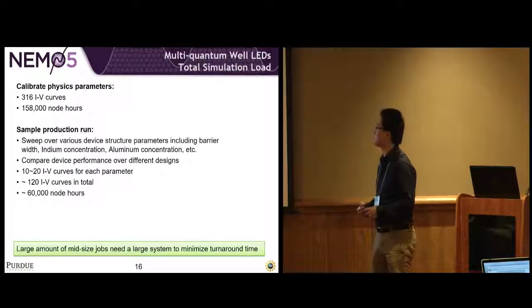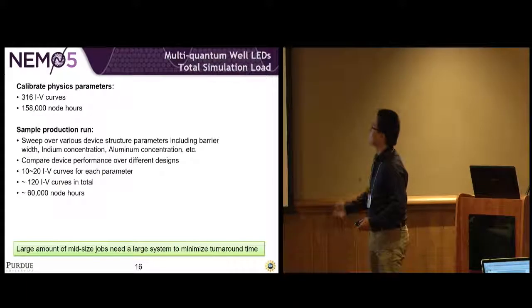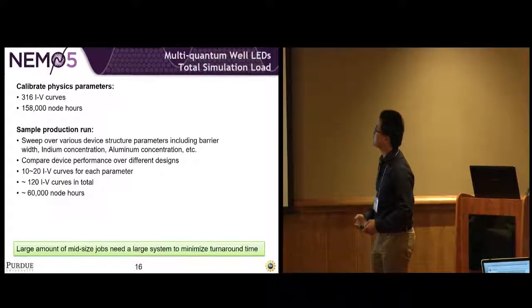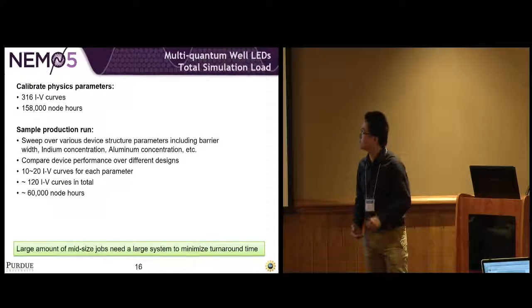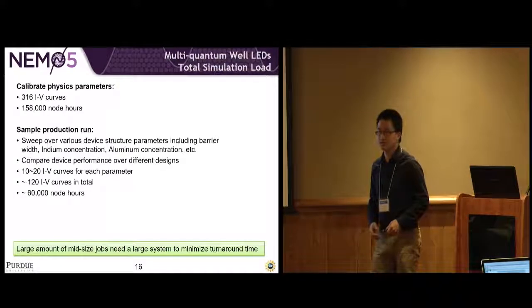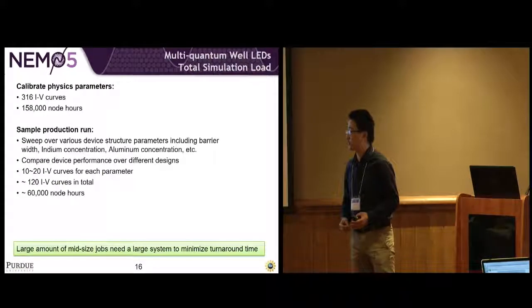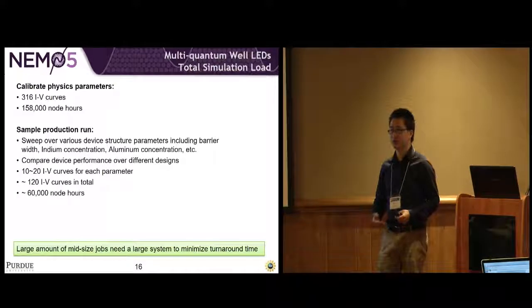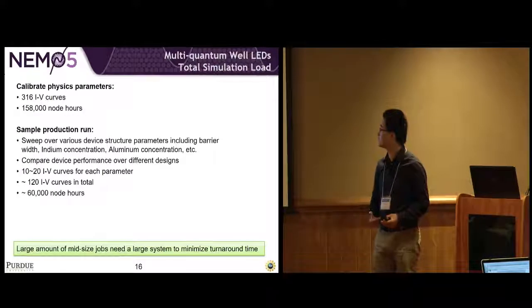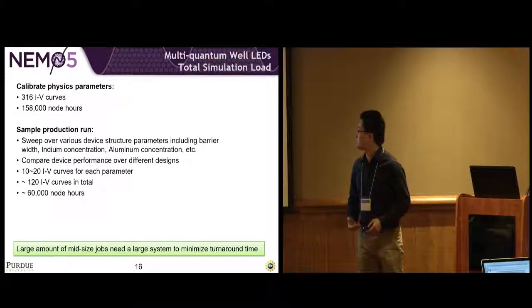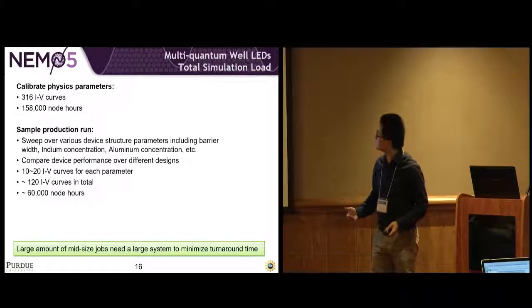In order to use the model for real simulation design, we need to first calibrate the physics parameters, say the recombination function rate. In this case, we need 316 IV curves that cost about 160,000 node hours. Then goes to sample production runs. We need to sweep different parameters in one LED device—for example, the geometry of the device, the concentration of different elements—and we compare all this result to find the best design.